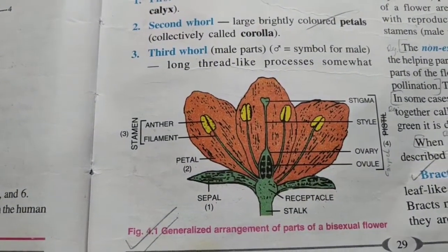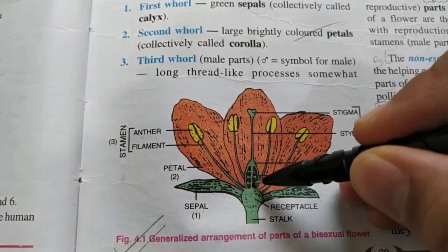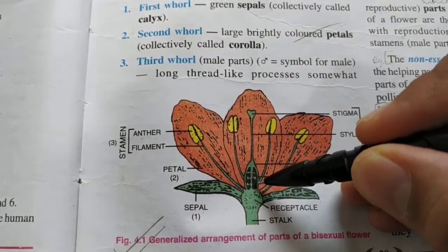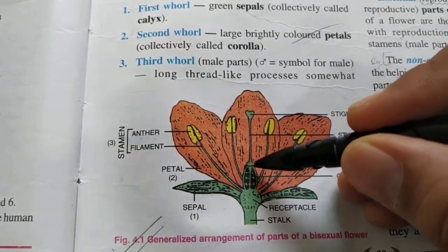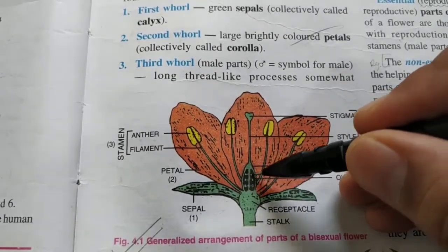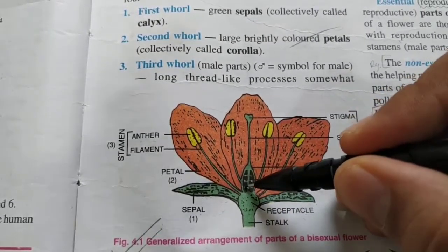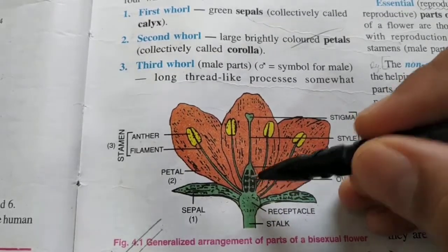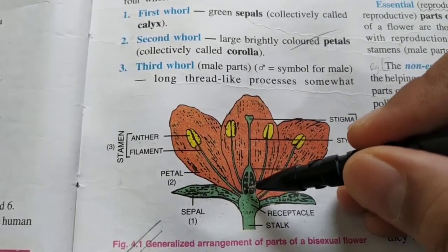Inside this ovary, we can see ovules attached to the placenta, which will become the stalks of the seeds. This will become the fruit — the ripened ovary — and these will become the seeds. Inside each seed, we shall have the embryo.